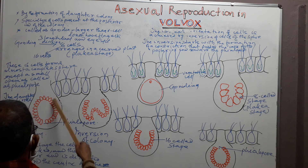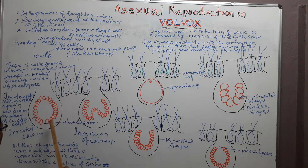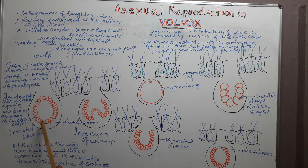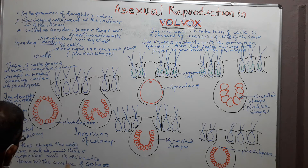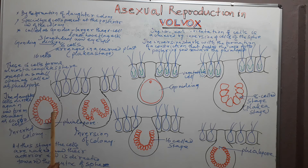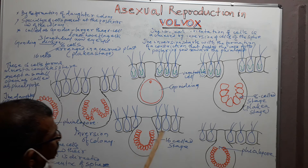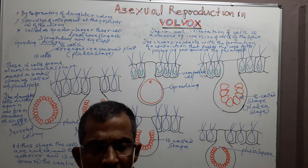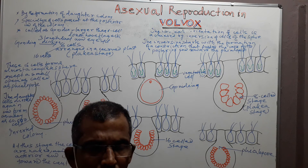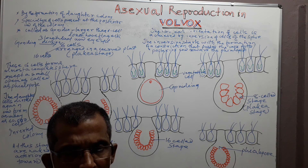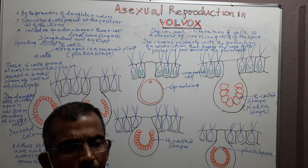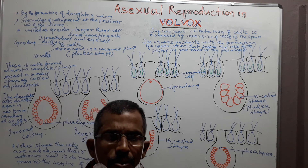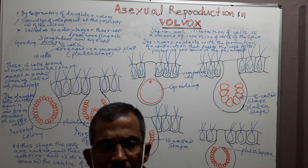The orientation of the cells becomes normal. All these cells together form a young colony. These young colonies are released to the outside when the mother colony undergoes disintegration. The young colony can also be released through the pore that is present near the gonidium. This is asexual reproduction in Volvox.